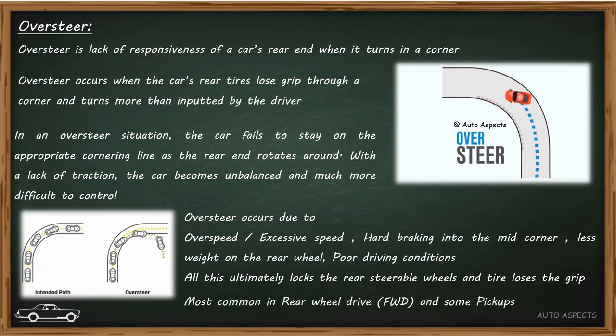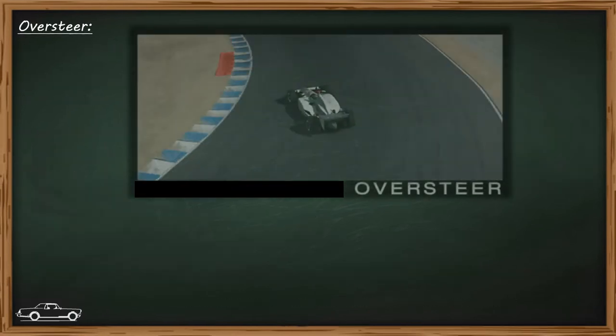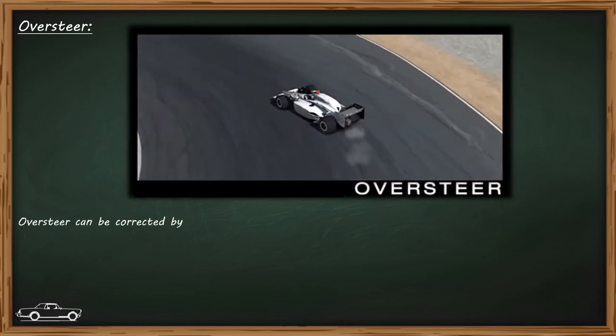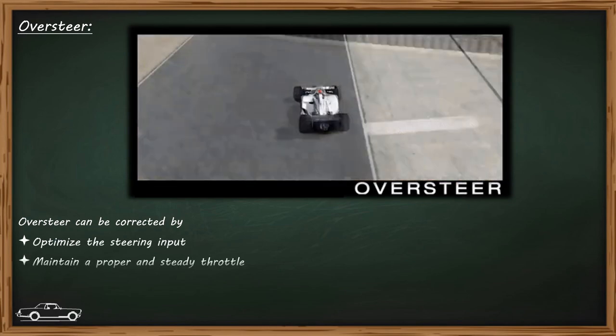Oversteer is common in rear wheel drive vehicles and in some pickup trucks. Oversteer can be corrected by optimizing the steering control, maintaining steady throttle, and avoiding slamming of brakes during cornering.